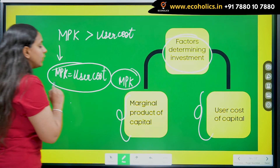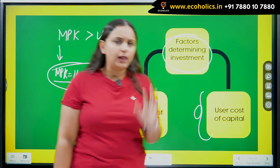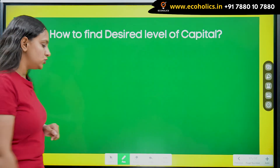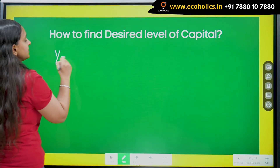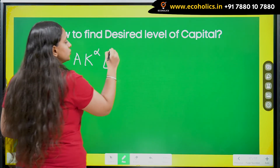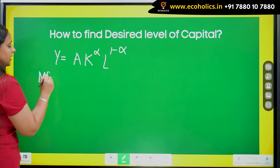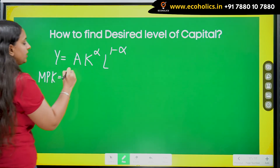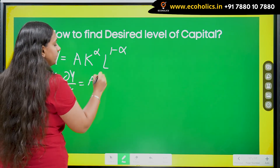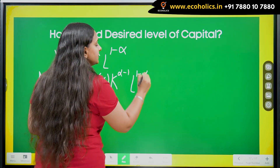Now, how are we going to solve for this optimum point? To help understand this, I will take an example of a simple production function. Let us say y = A·K^α·L^(1−α). What is going to be the MPK here? MPK is the derivative of output with respect to capital, so we get A·α·K^(α−1)·L^(1−α).